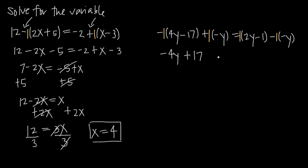Positive 1 times a negative y is just going to give us a negative y. Because it was a plus sign, the sign inside the parentheses didn't change — we started with negative y and ended with negative y. On the right-hand side, 1 times 2y gives us 2y, and 1 times negative 1 gives us negative 1. Then negative 1 times a negative y gives us a positive y. Now that we've eliminated our parentheses, we just simplify.